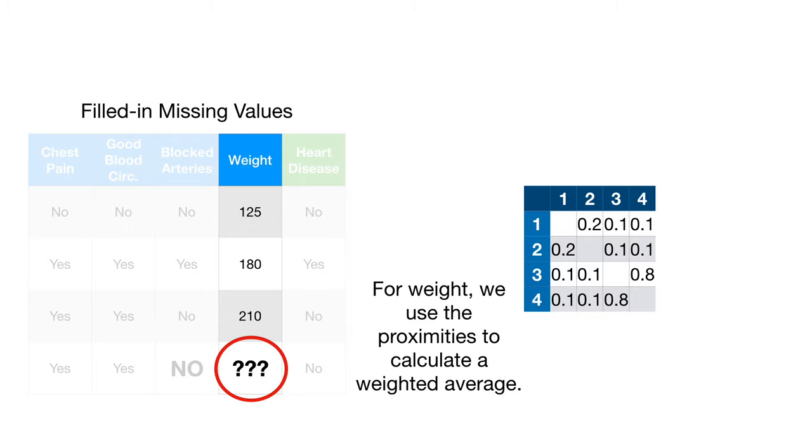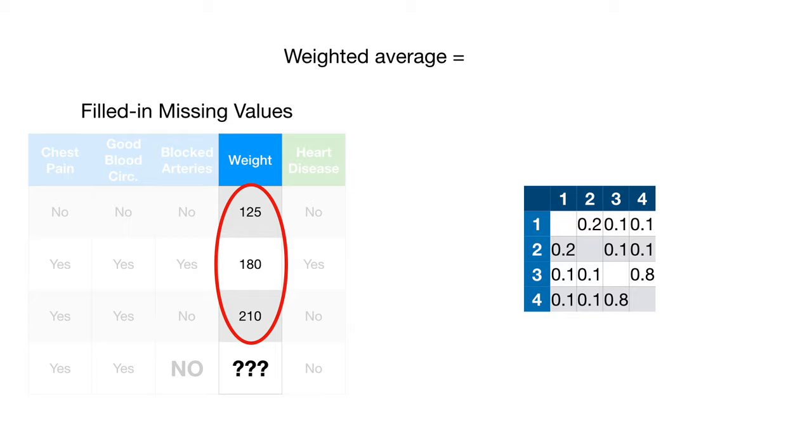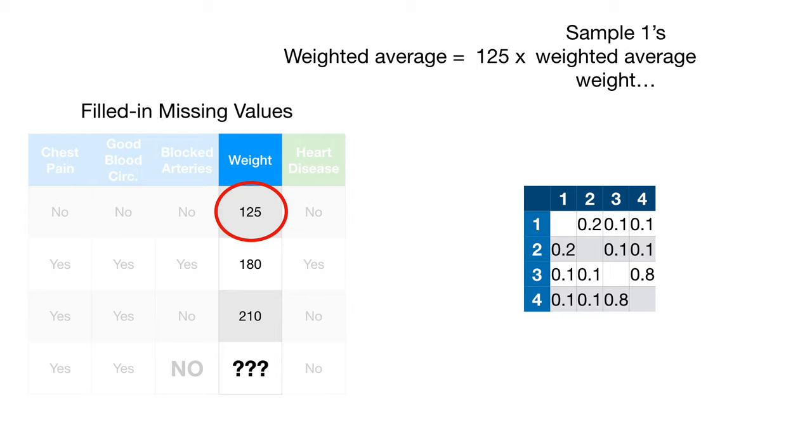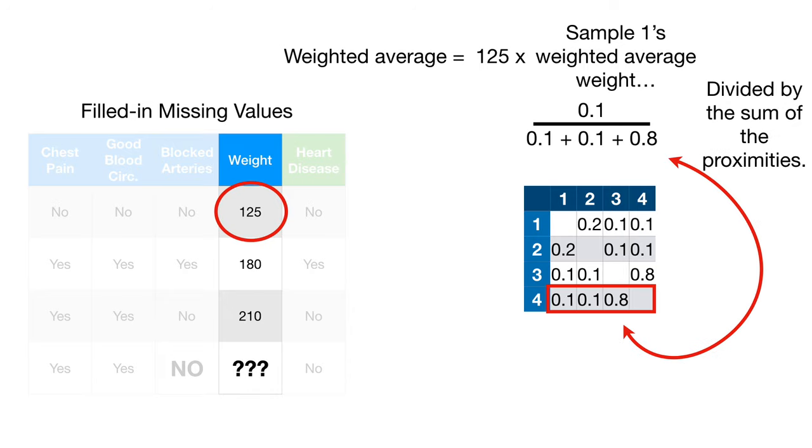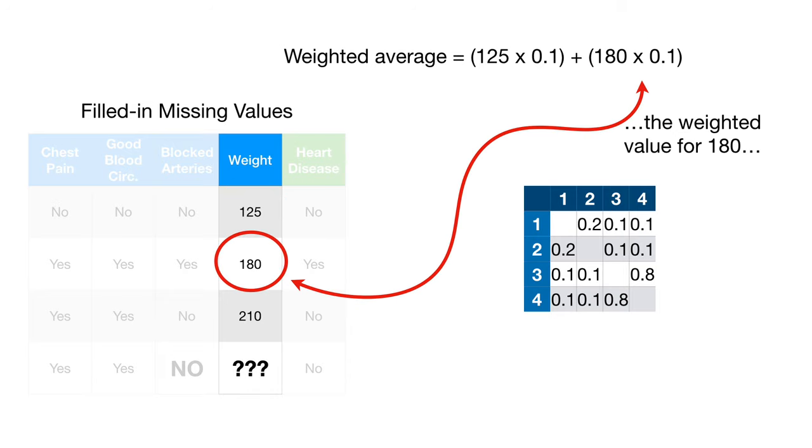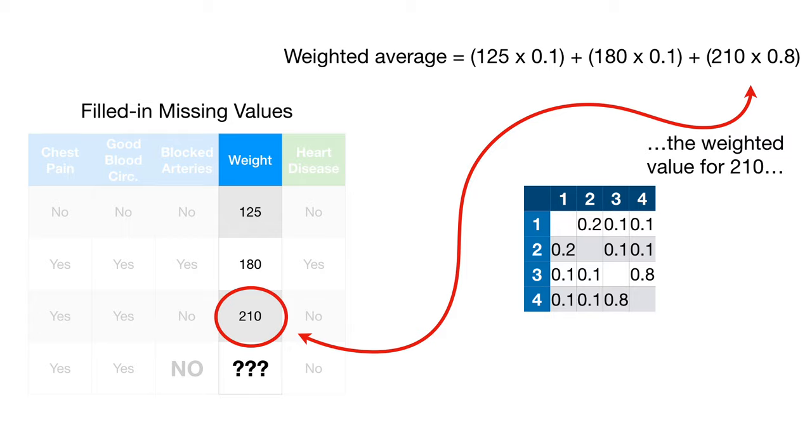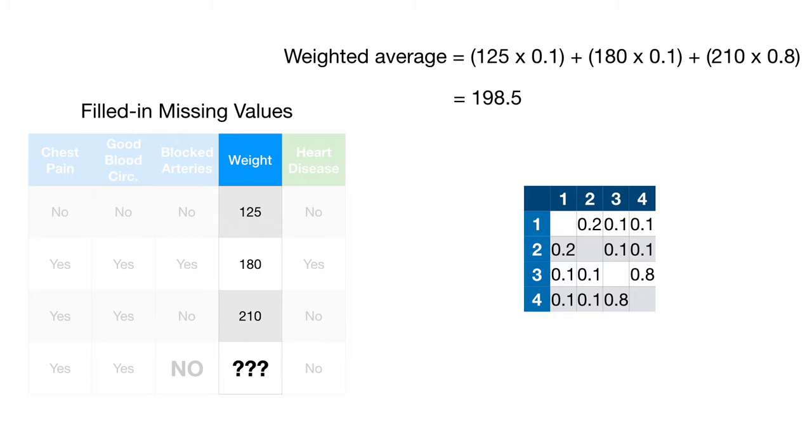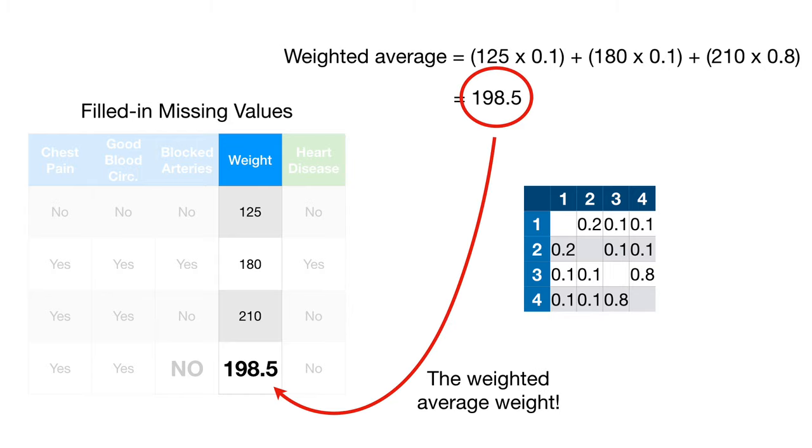For weight, we use the proximities to calculate a weighted average. In this case, the weighted average equals sample one's weight, sample one's weighted average weight. Sorry if there's any confusion between a patient's weight or a sample's weight and the weight used in the weighted average. To calculate that weight, we start with the proximity for sample one, divided by the sum of the proximities. So sample one's weighted average weight is 0.1. Here's the weighted value for sample number two, who weighs 180. Here's the weighted average value for sample number three, who weighs 210. Ultimately, the weighted average of weight is 198.5, and remember, the weights that we used in the weighted average were based on proximities.